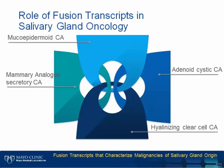Our understanding of salivary gland pathogenesis was historically based on morphologic and immunophenotypic observations, rather than the molecular events that precede them. In recent decades, we have seen the unveiling of disease-defining fusion transcripts that encode novel oncoproteins or ectopically expressed normal or truncated oncoproteins in several salivary gland tumors. These fusion oncogenes typically encode transcriptional coactivators, transcription factors, and tyrosine kinases. Several epithelial malignancies of salivary gland origin frequently harbor fusion transcripts: mucoepidermoid carcinoma, mammary analog secretory carcinoma of salivary glands, adenoid cystic carcinoma, and hyalinizing clear cell carcinoma.